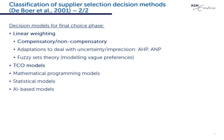Following DeBoer et al., the main alternative decision models for the final choice phase include five main varieties: linear weighting, TCO models, mathematical programming, statistical models, and artificial intelligence-based models. Linear weighting techniques are the most popular. In these techniques weights are given to the criteria and the biggest weight indicates the highest importance. Of these, the compensatory and non-compensatory methods are the most popular. We will come back to these starting from slide 6.